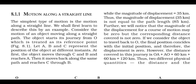Motion along a straight line. The simplest type of motion is the motion along a straight line. Consider the motion of an object moving along a straight path. The object starts its journey from O, which is treated as its reference point. Let A, B, and C represent the positions of the object at different instances.